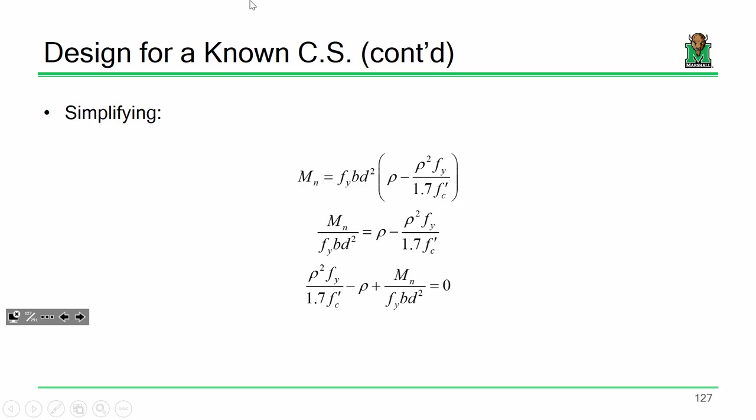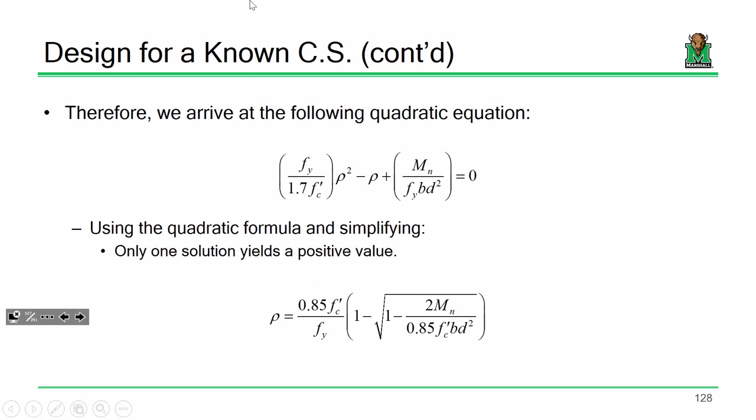We do a little rearranging and multiplying out, and what ends up happening is this starts to look like a quadratic equation — a pile of junk times rho squared, minus a pile of junk times rho, plus another pile of junk — essentially ax-squared plus bx plus c equals zero. So it's a pretty simple quadratic. Just break out the quadratic formula and do your algebra. I'm not going to make you all do the algebra because if you got through Calc 3, you can do algebra.